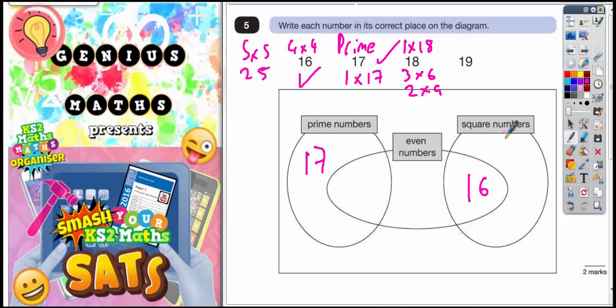So it's not prime, and it's not square, but it is even. So 18 needs to go in this section here.